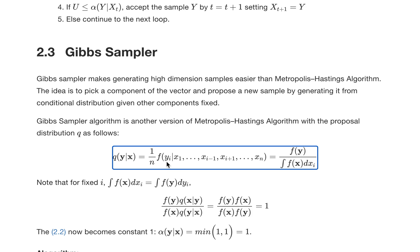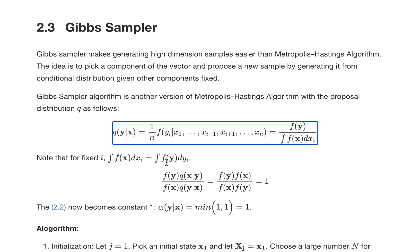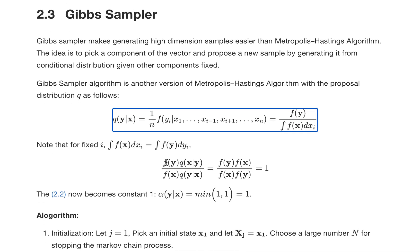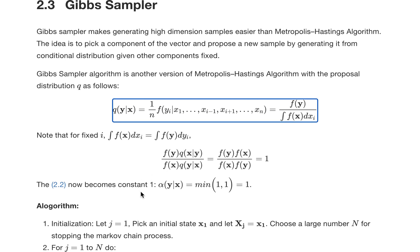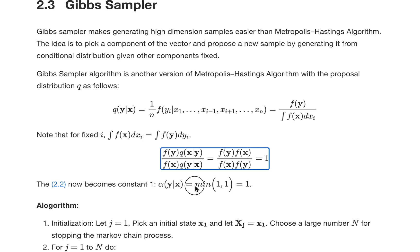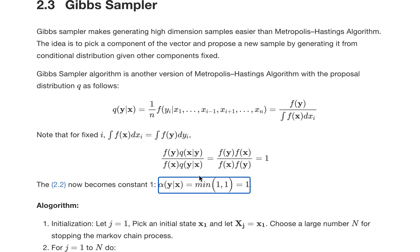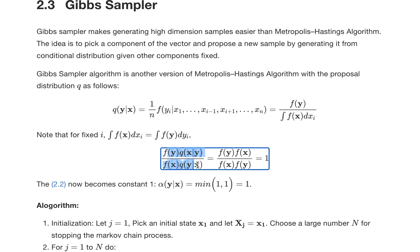If we insert that q function into our alpha—this is the alpha term—this is a minimum of this condition and one, whichever comes smaller.